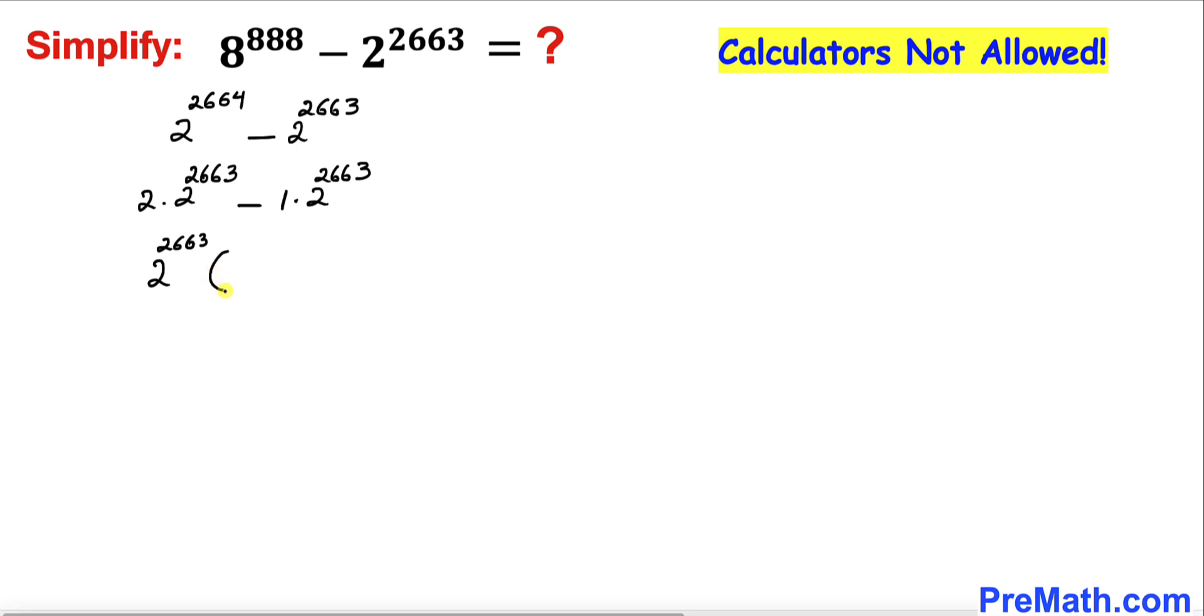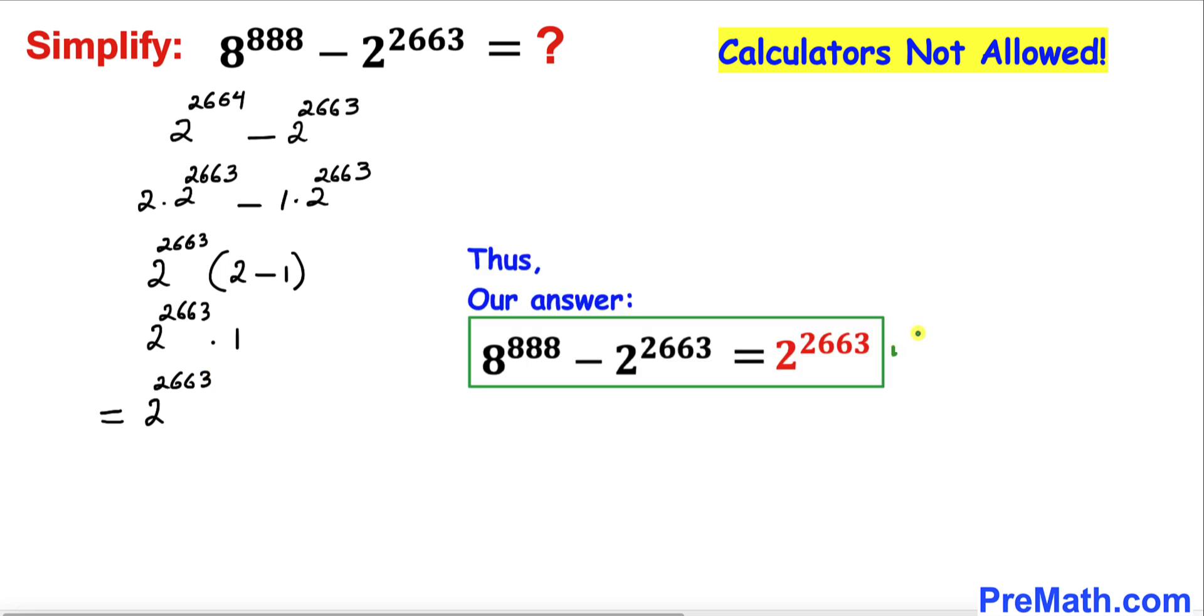We are left with 2 minus 1. And 2 minus 1 is the same as 1. Therefore our simplified answer is 2 power 2663. Here's our simplified answer.